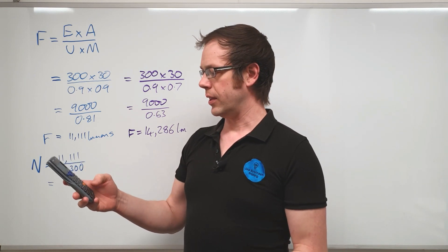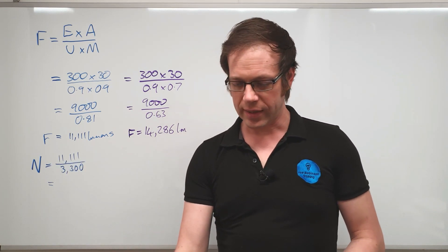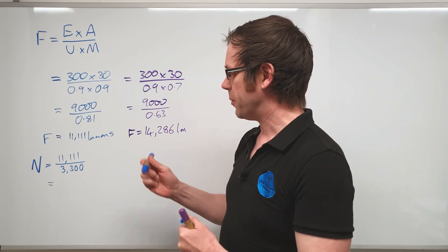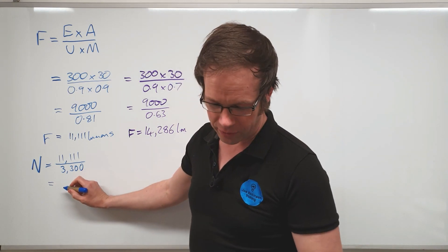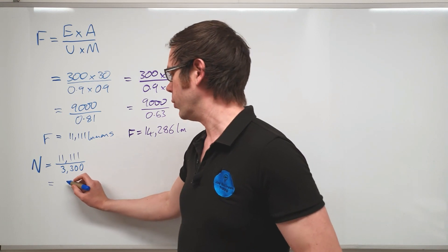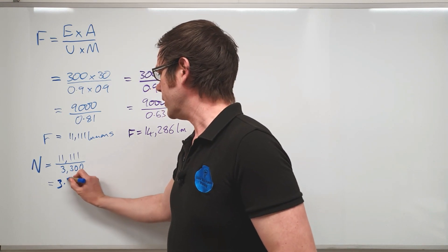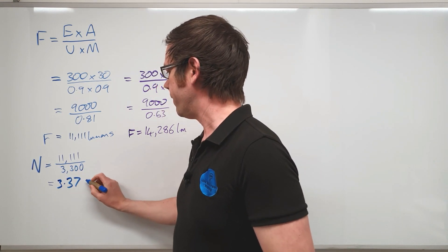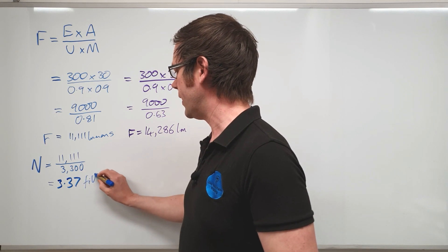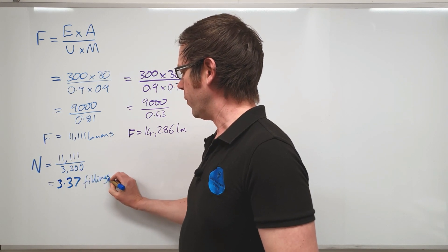So here we've got 11,111 divided by 3,300, and when we do that calculation, I won't bring it up on screen. If you don't know how to put this into your calculator you may well be on the wrong course. So 11,111 divided by 3,300 and we get there. Now we get an interesting answer because actually this comes out at 3.37, we'll call it 3.37 fittings.